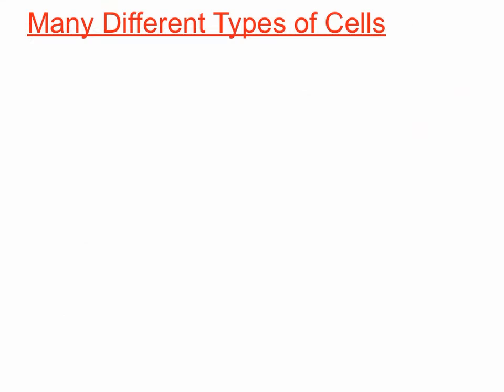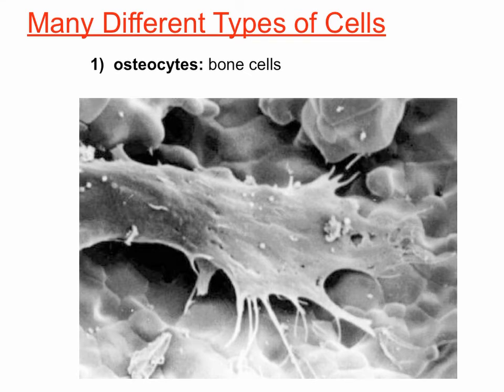There are several different types of cells you're going to be responsible for knowing about. Osteocytes are bone cells — 'cytes' meaning cells, 'osteo' meaning bone, like osteoporosis. A piece of bone is called an osteon. The cell in the middle of the picture with all those finger-like projections coming off of it is a bone cell. We'll go back to structure fitting the function for that one.